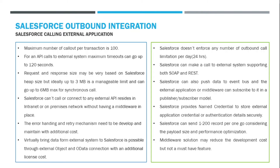However, outbound integration has other limits. For example, per transaction you can have a maximum of 100 callouts. For an API call to an external system, the maximum timeout you can set is two minutes — 120 seconds. By default it may be 10 seconds, but you can set it up to 120 seconds using the set-timeout feature. There is no strict documentation on request or response payload size, but heap size is a consideration.